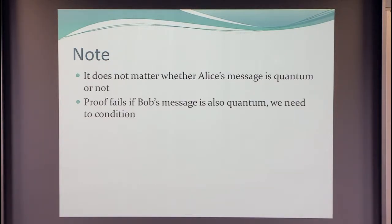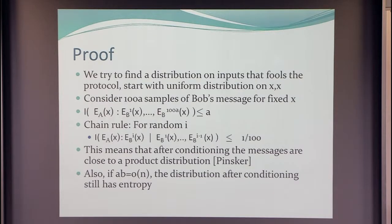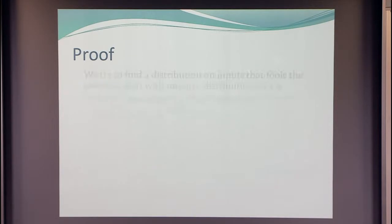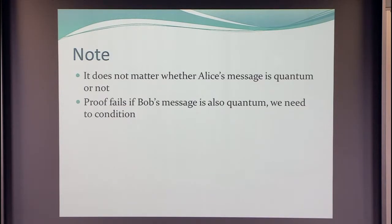One thing that comes out immediately is that it does not matter whether Alice's message is quantum or not. All we need is that the information inequality holds, and then we have the chain rule — it still holds if Alice's message is quantum. What happens if Bob's is quantum? That would be bad, because we're using conditional entropy and we want to say we can fix those messages, and you cannot fix a quantum state like that and have this information chain rule. So one of the messages can be quantum, the other one cannot — which is fine, because if both messages are quantum, the lower bound is simply not true.